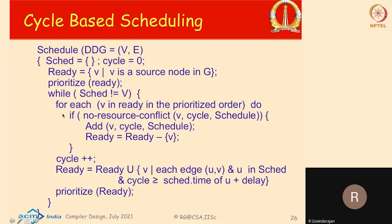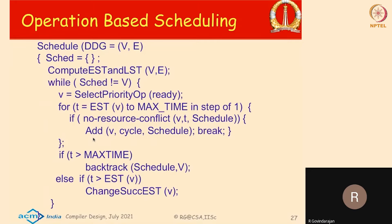You keep scheduling all nodes in the ready queue as much as you can for the current cycle. Once you have exhausted all of them or used all your resources, you go to the next cycle. In the next cycle, you again see which nodes have become ready — for example, if the source node produced a value after time step one, the nodes dependent on it become ready. You mark those and add them to the ready list, prioritize again, and keep scheduling. This is how cycle-based scheduling works. There is something similar called operation-based scheduling, where instead of going cycle by cycle, you pick an operation and try to schedule it between its earliest and latest start times.